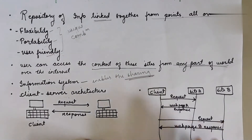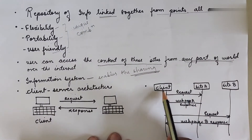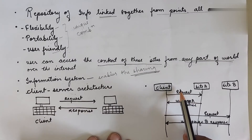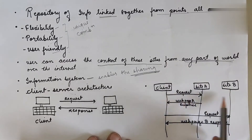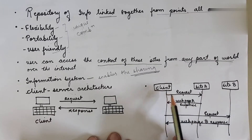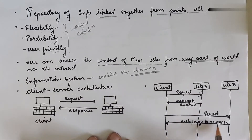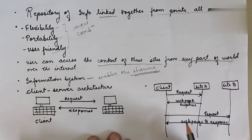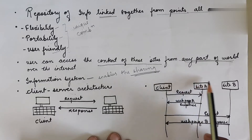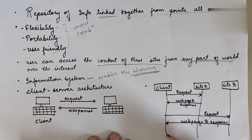In this diagram you can easily understand it. For example, there is a client that is going to send a request to find information about WWW. It searches on different servers or sites — for example, Site A and Site B. The request is sent to different sites, and we get responses: Web Page A response and Web Page B response. So we get multiple pieces of information from different sites all over the world.